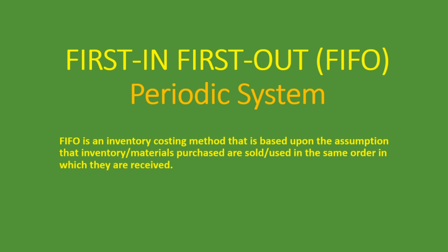So what is first in first out? FIFO is an inventory costing method based upon the assumption that inventory or materials purchased are sold or used in the same order in which they are received — first in, first out. The first inventory to come in must be the first inventory to go out. You can think of it like when a grocery store buys milk — it obviously wants to sell the oldest milk first, because that's the first one to expire.